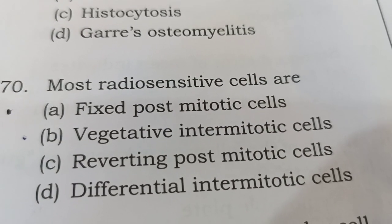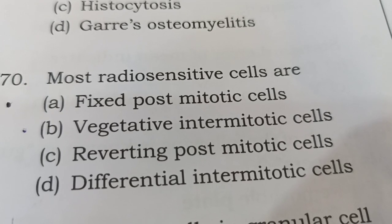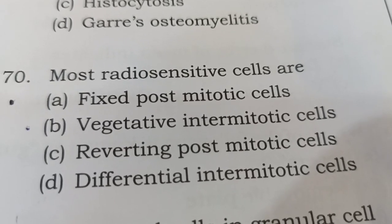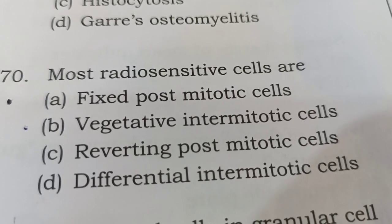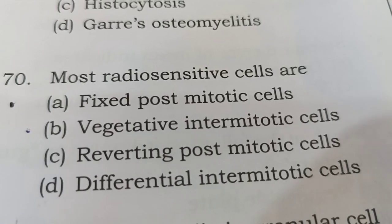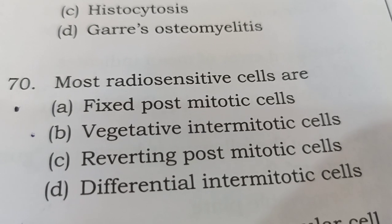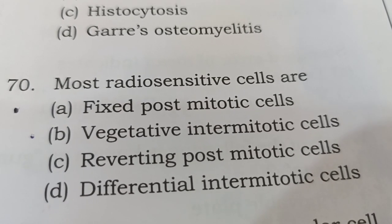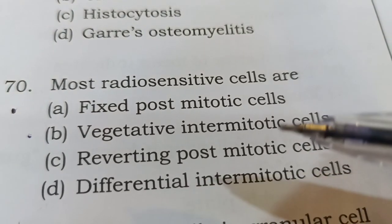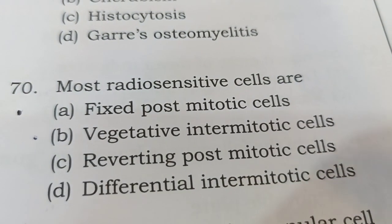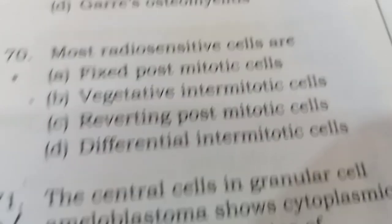Next question: Most radiosensitive cells are. Your options are: A) Fixed post-mitotic cells, B) Vegetative intermitotic cells, C) Reverting post-mitotic cells, or D) Differential intermitotic cells. The most probable and correct answer is option B, Vegetative intermitotic cells.